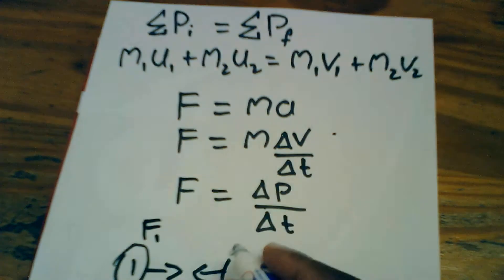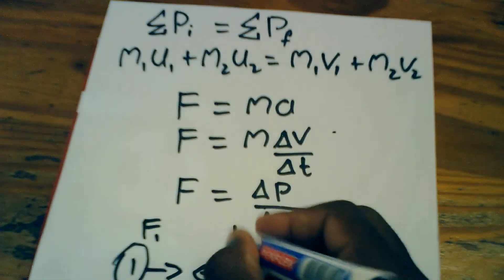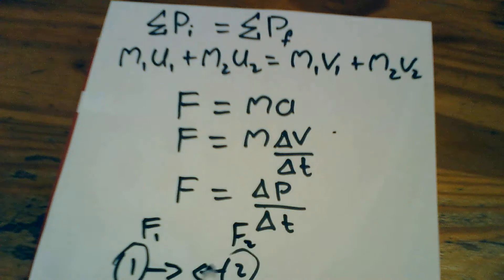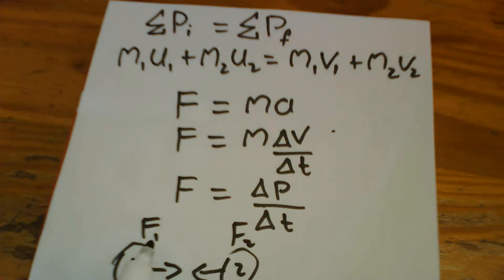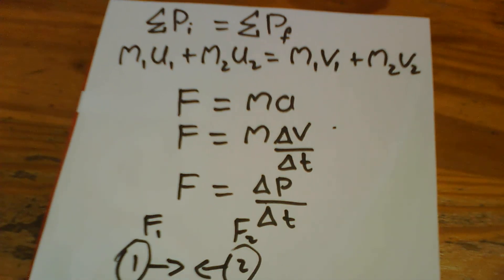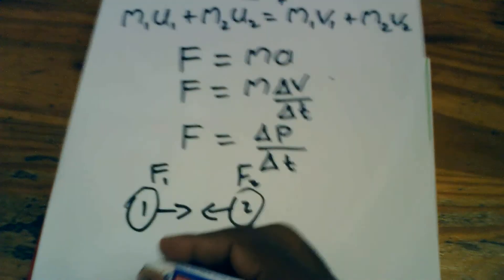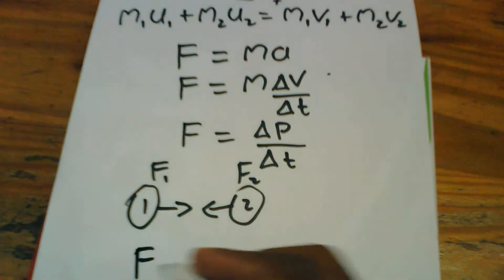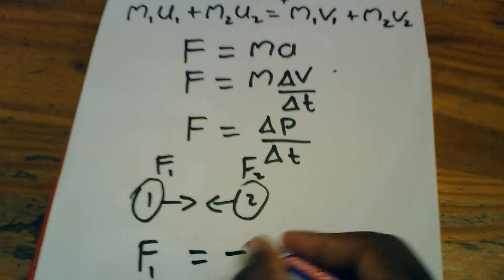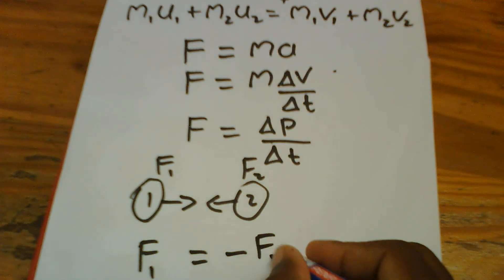the force that ball 1 exerts on ball 2, and the force that ball 2 exerts on ball 1, will be the same in magnitude but different in direction. This means that F1 will have to equal to negative F2.